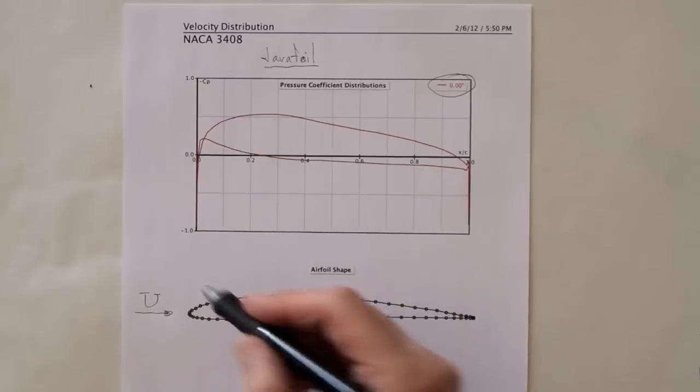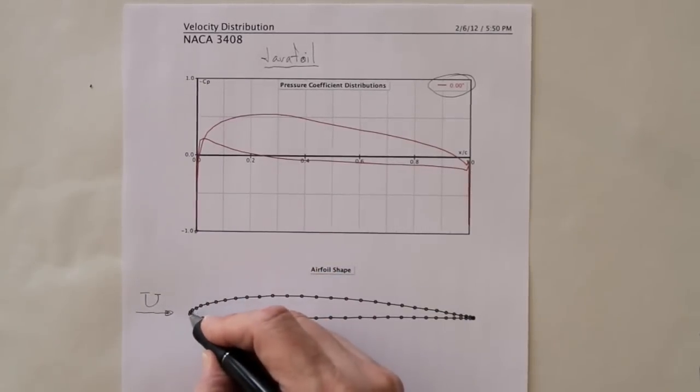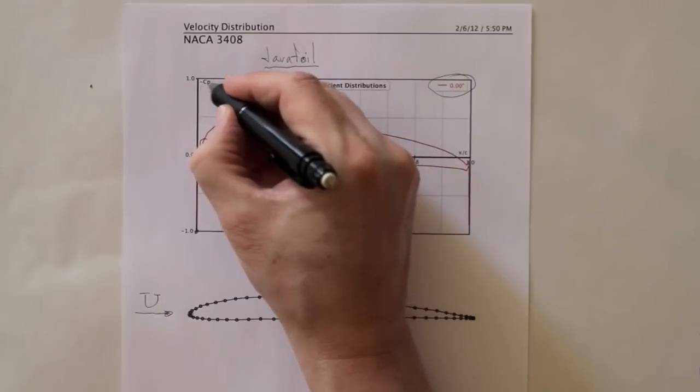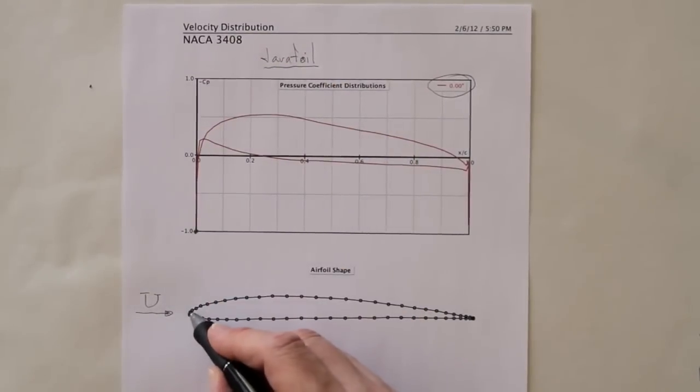So what this is telling us is that right at the front of the wing, right about here, the pressure—because this is a plot of negative CP—the pressure is actually higher than ambient pressure. There's a stagnation point here and the pressure is quite high.